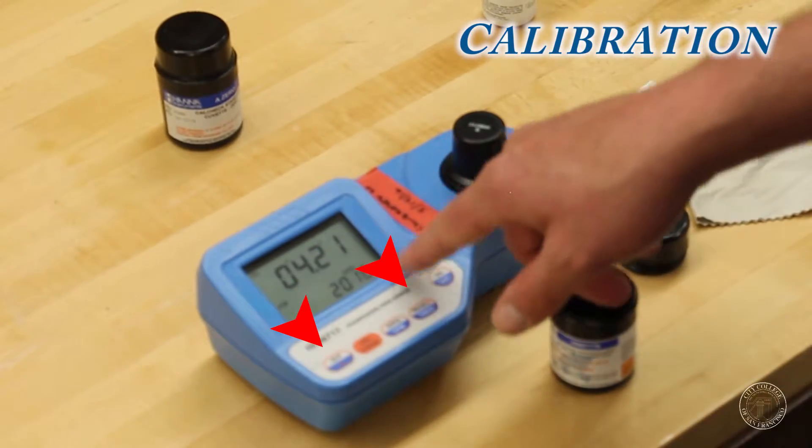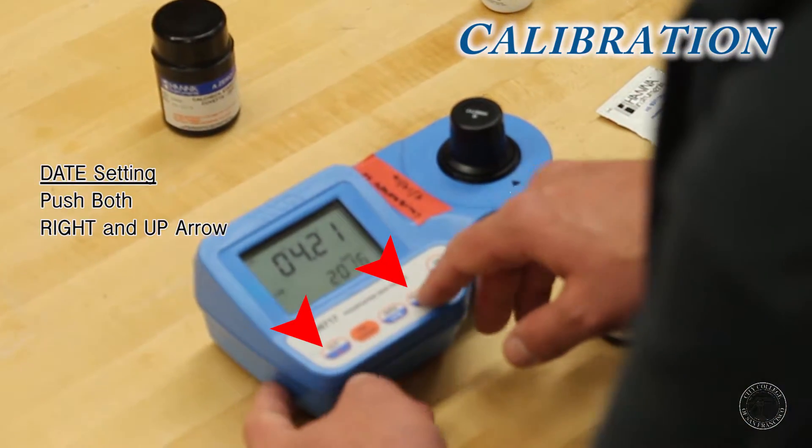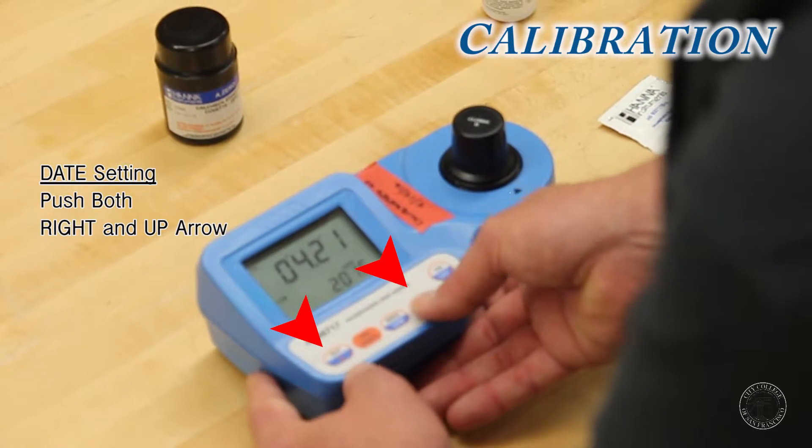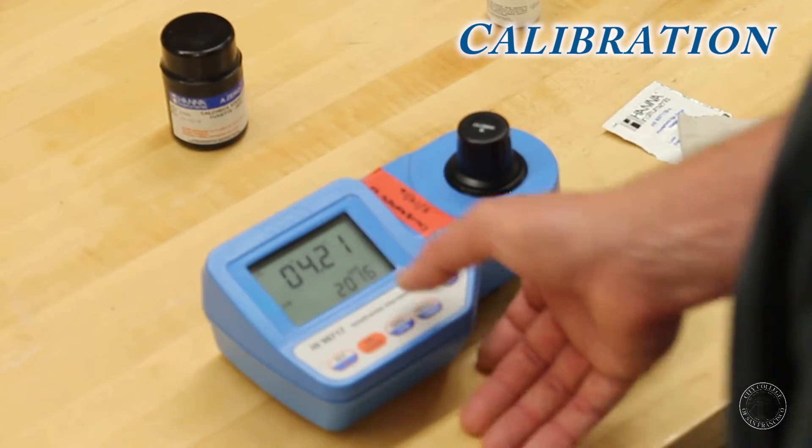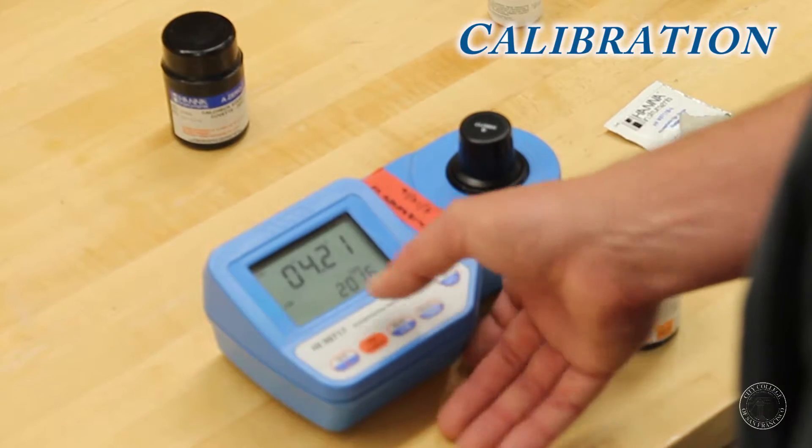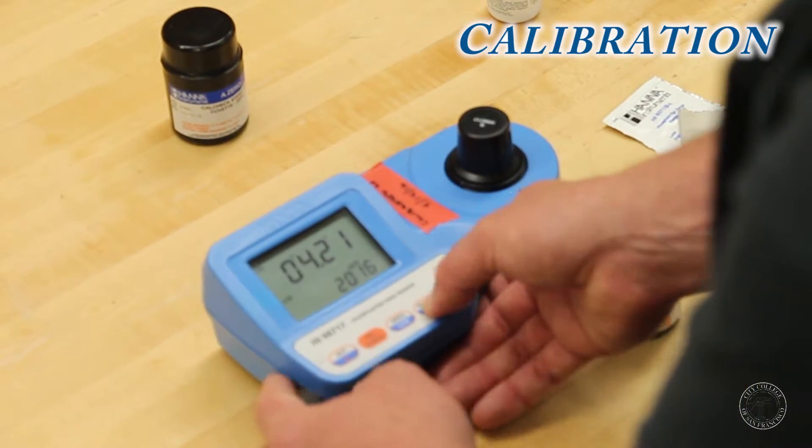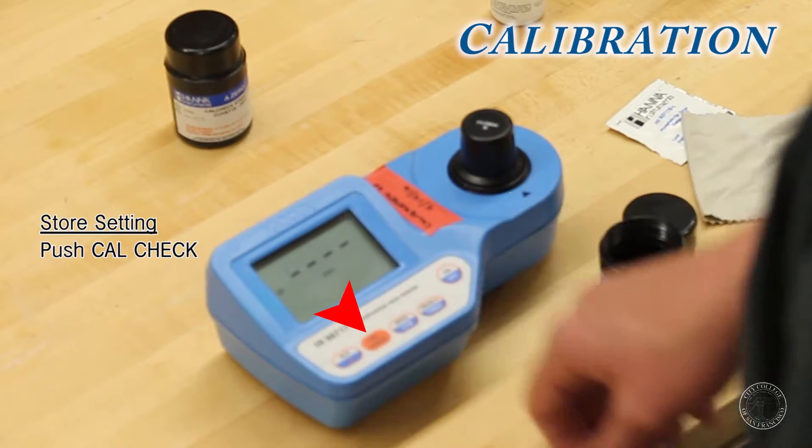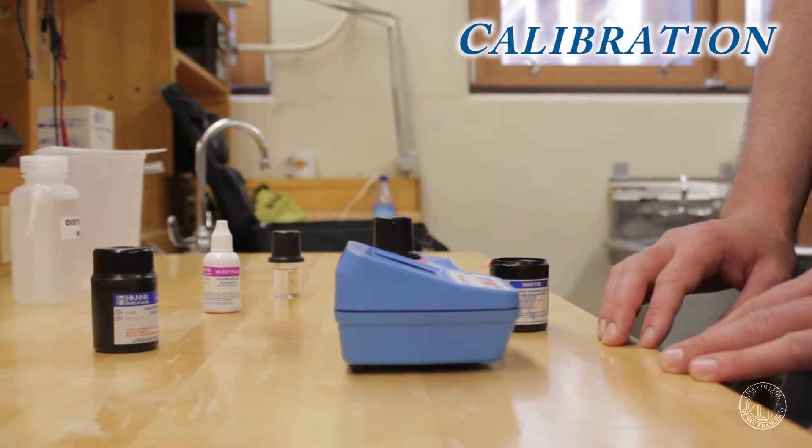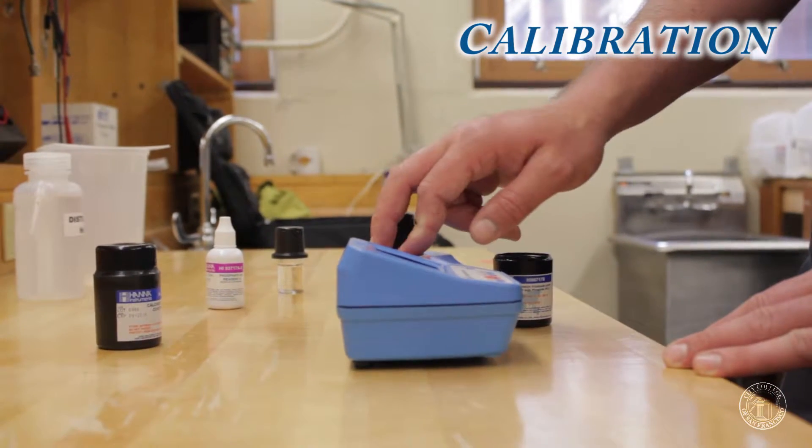Every time you calibrate it, it wants a date set. So using the right arrow and the up arrow, you can transfer between the year, the month, and the day. So this is set for 2016, April, and 21st. And that is correct for us here. So then you just hit CalCheck to store everything. Now the calibration is stored and the machine has been calibrated.